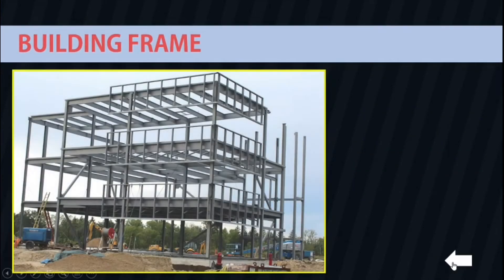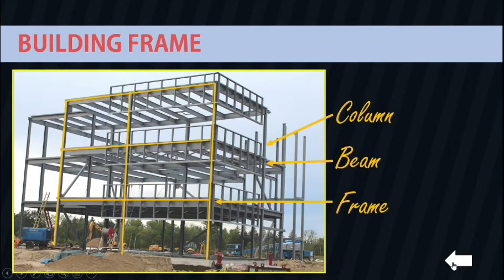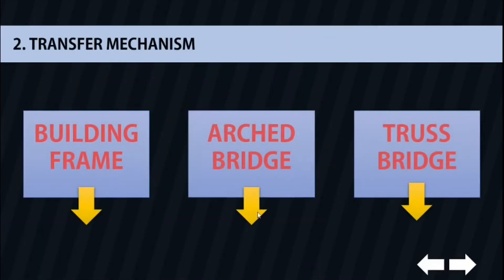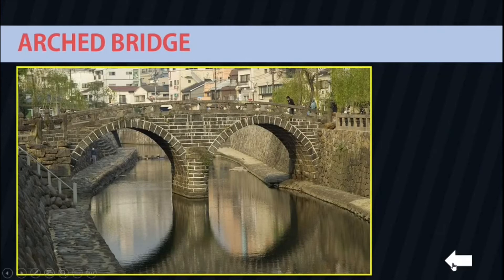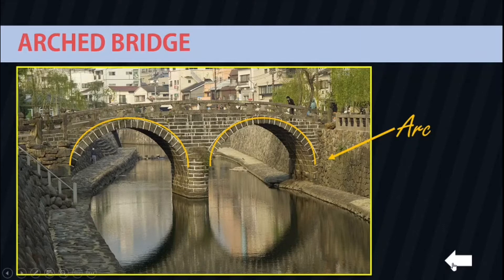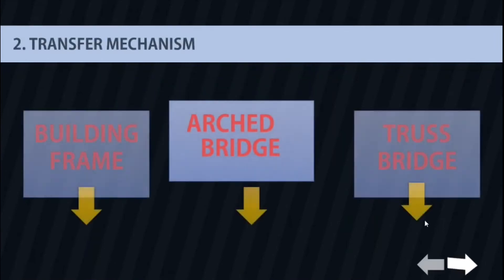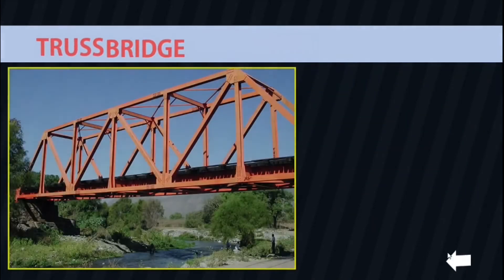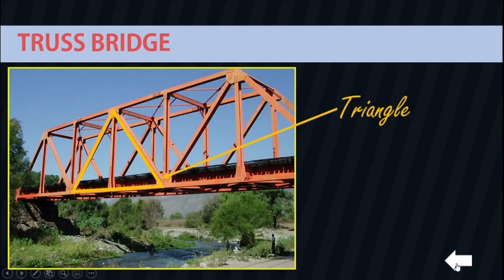Let's start with our building frame. The composition of our frame includes the column and the beam, which composes our frame where it transfers the loadings from one element to the other structure. Next is our arc bridge. Arc bridges are composed of arcs where arcs support their loads in compression. The third one is truss bridge, which consists of slender elements forming triangles that resist actual tensile or compressive forces.